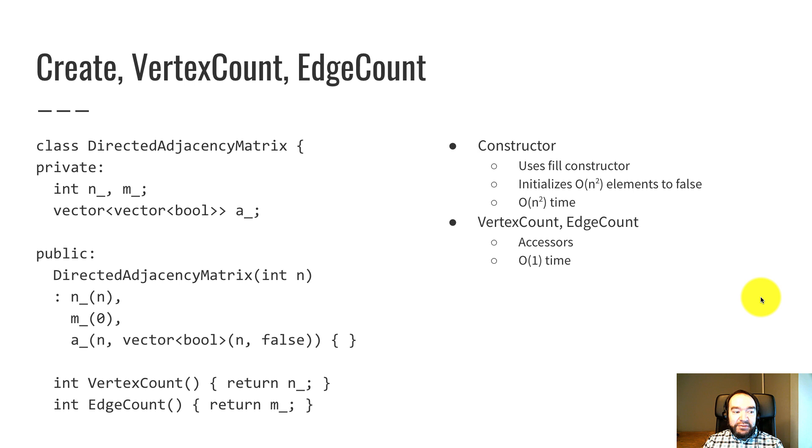So now let's look at some pseudocode to implement this. This isn't exactly C++, but it's C++ style pseudocode. So I've got my directed adjacency matrix class. Doesn't need to be a template class anymore because there's no base element type.